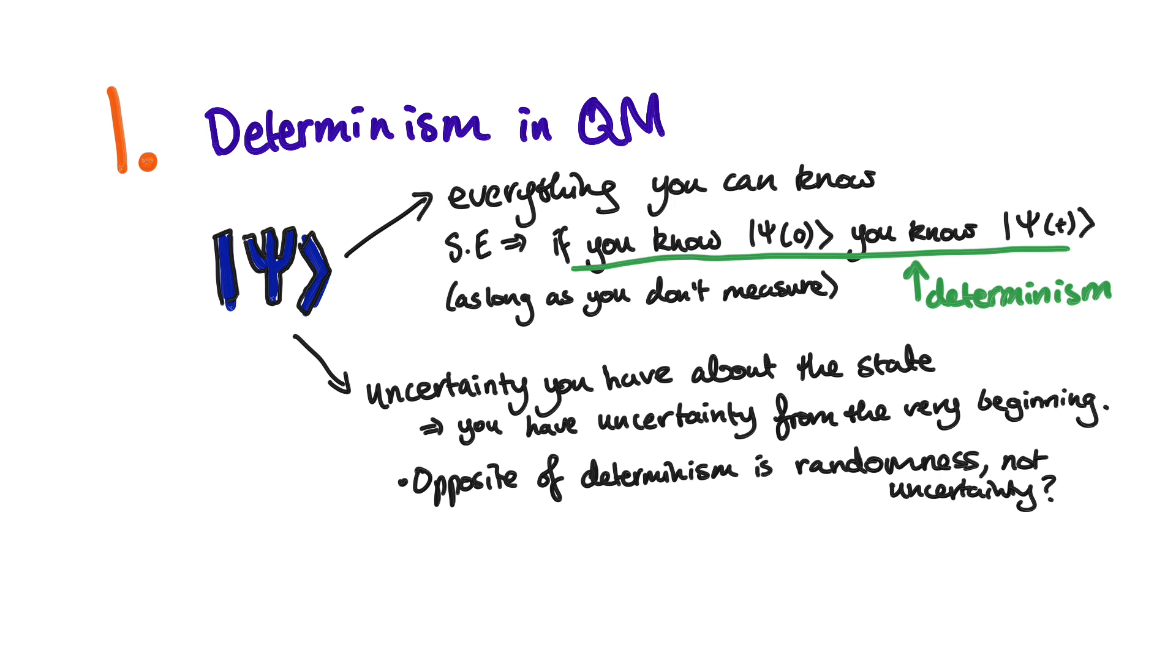Also, even in the case with uncertainty, doesn't the Schrödinger equation tell you how to update your uncertainty, so would you accept that as a form of determinism or not?